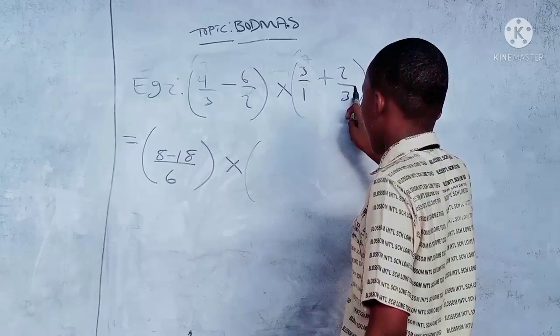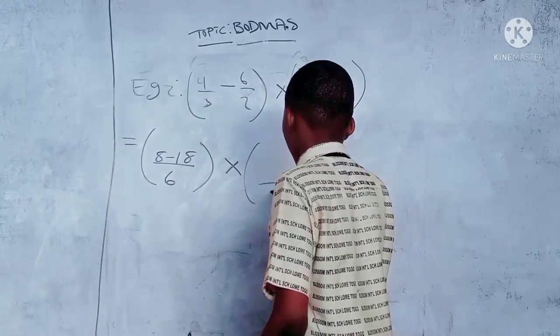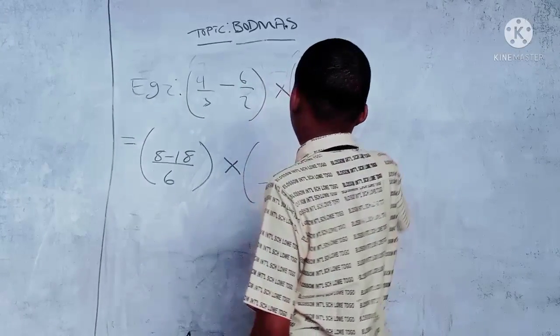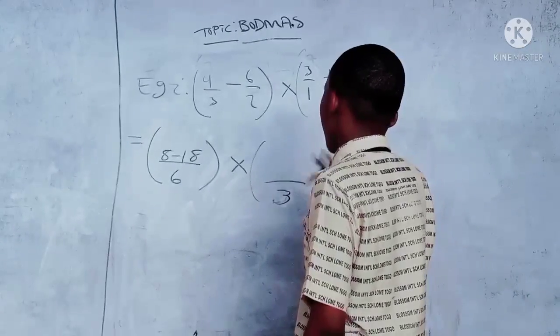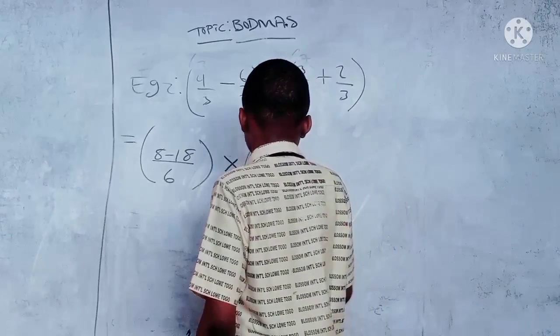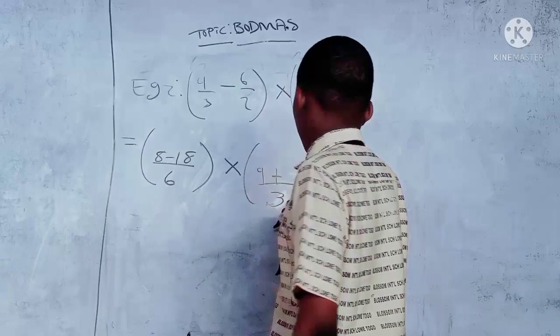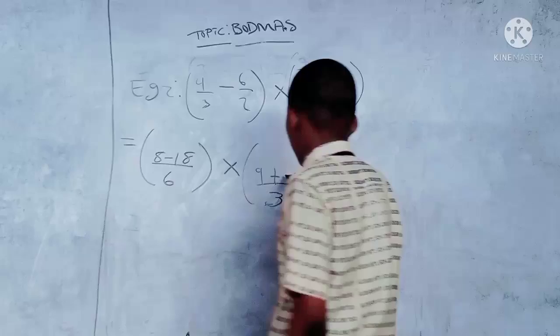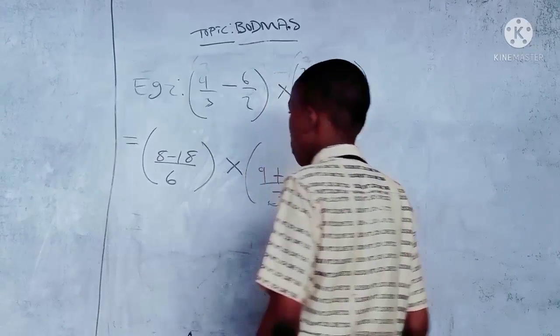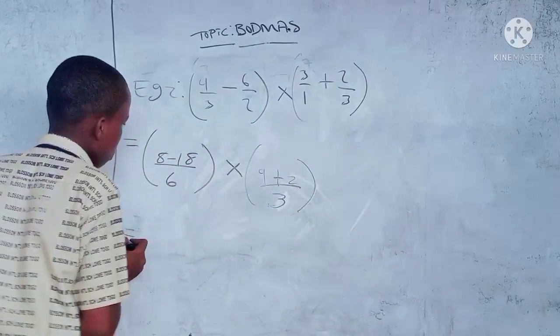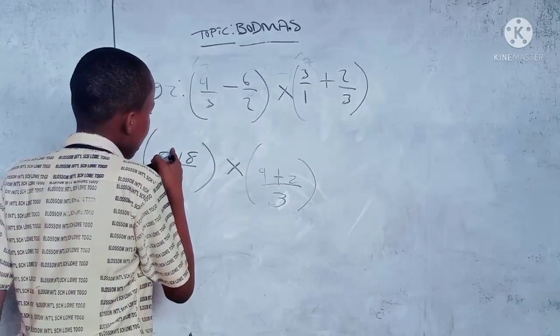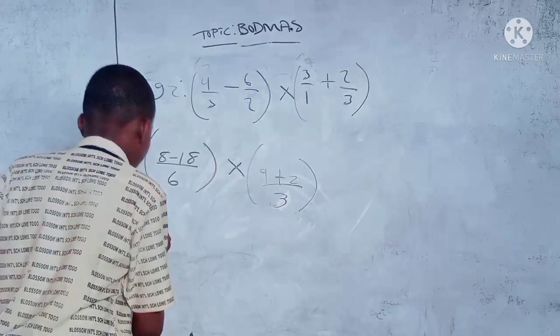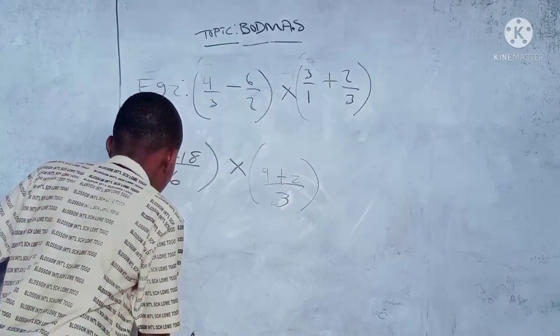LCM of one and three is three. Three divided by one is three, three times three is nine, plus three divided by three is one, one times two is two, close bracket. Equals eight minus eighteen, negative ten over six.